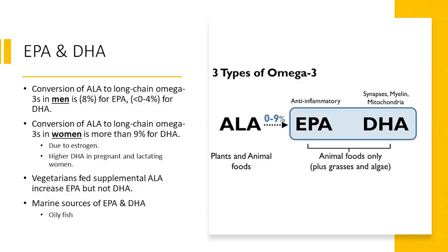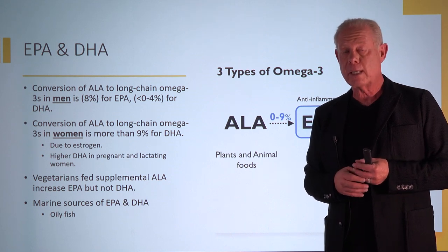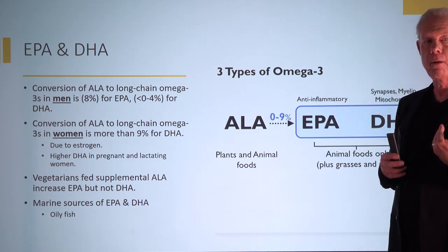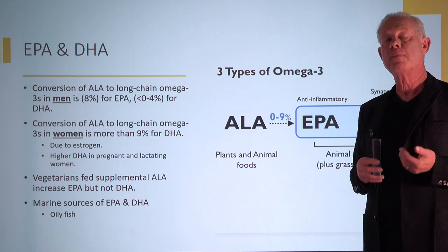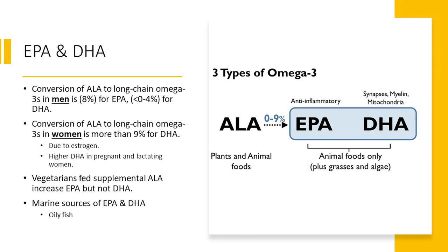Can't we just make EPA and DHA from plants? We can, but unfortunately it's a very inefficient process. The conversion of ALA to EPA and DHA is very low — in men, zero to four percent, probably closer to one percent. In women, it goes much higher, double that, up to eight or nine percent of DHA, mainly because of estrogen.